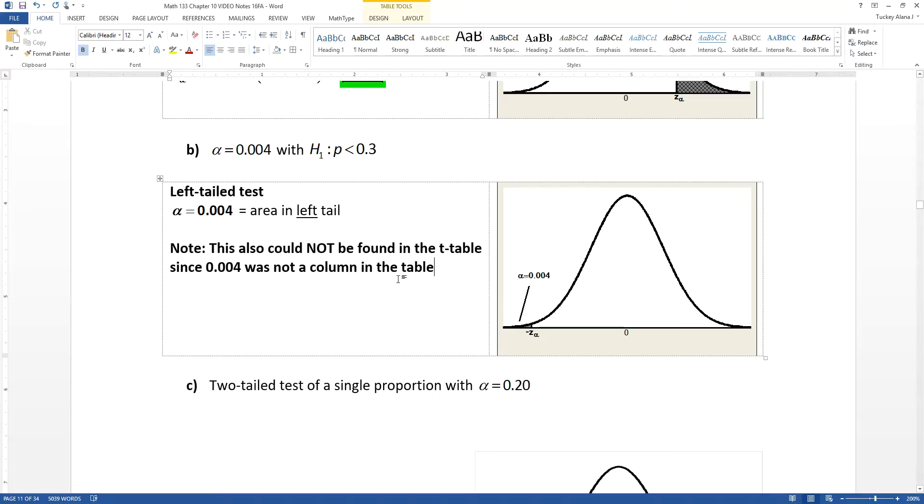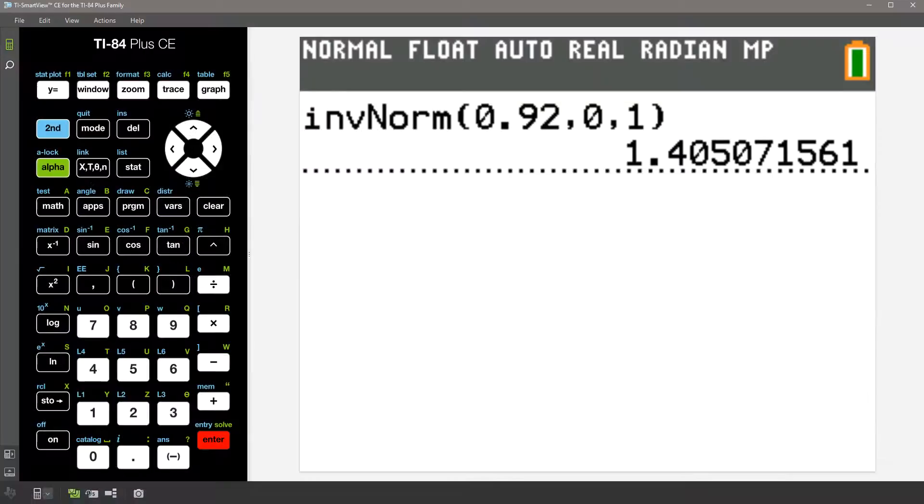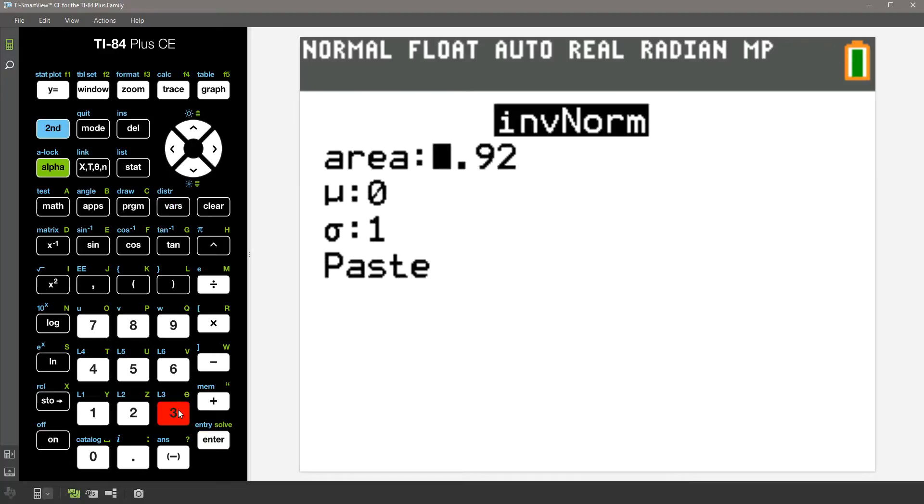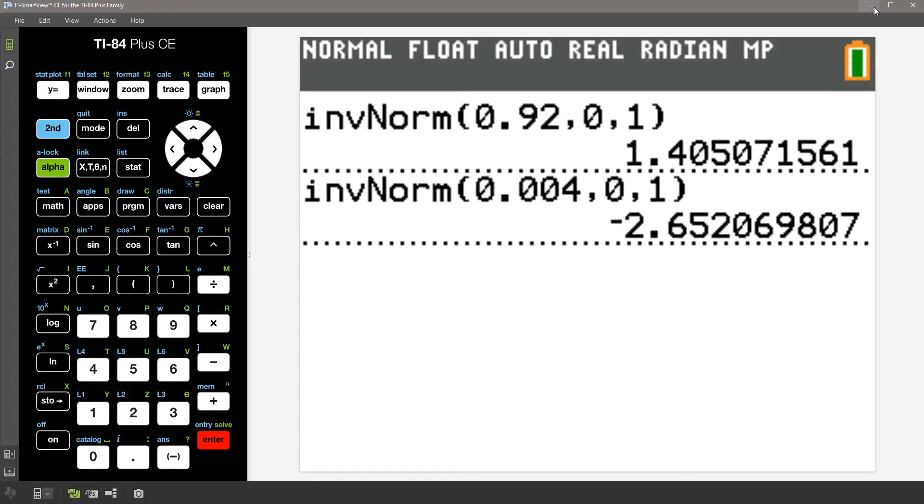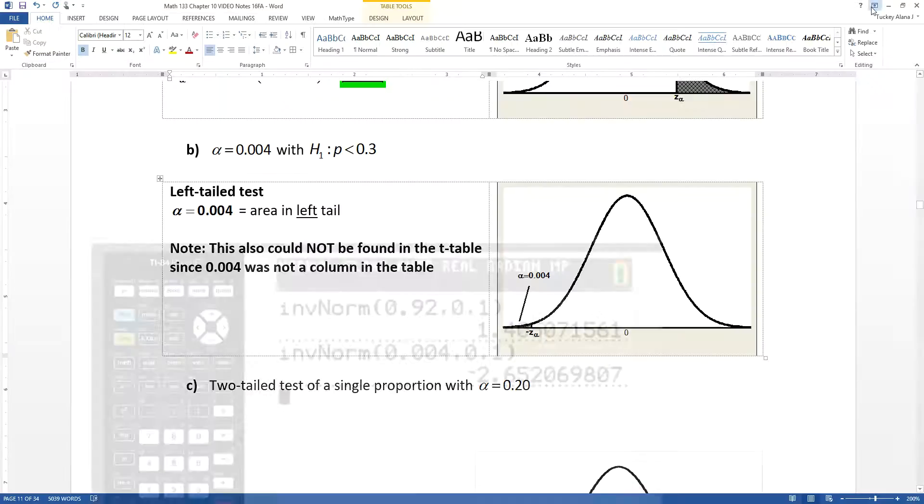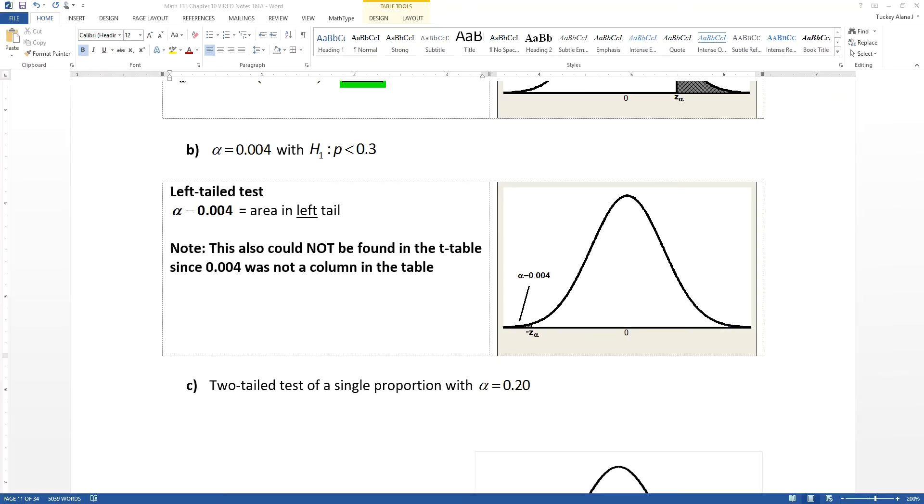Now we know that 0.004 is not a column on our table, so we're going to be stuck using the calculator again. So let me go back to inverse norm, which is above the variables button. I've hit number three, hit 0.004. I'll go down to paste and press enter and press enter. And I get negative 2.652, which makes sense. Make sure that when you come up with an answer that it seems appropriate for your problem, which this does. It seems like it's pretty far over there to the left, and indeed it is.